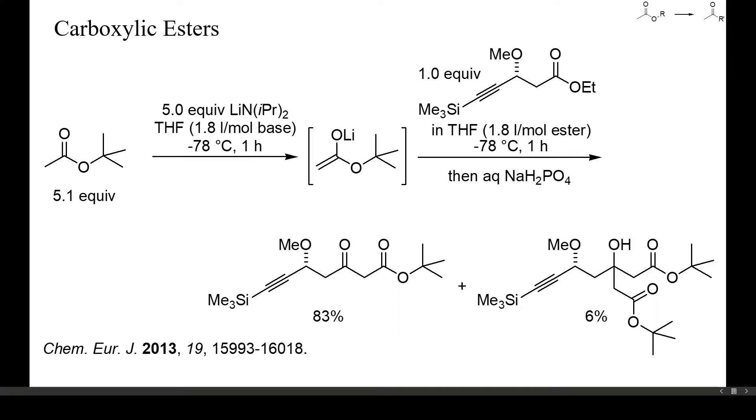Alternatively, mixed Claisen condensations can also succeed if one of the two esters is particularly unreactive, as in this example. Here tert-butyl acetate was lithiated with LDA and then condensed at low temperature with an enolizable ethyl ester. Despite the structural complexity of the electrophile, a high yield of ketone resulted, together with a small amount of tertiary alcohol.